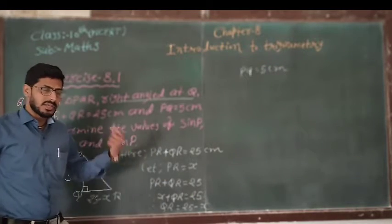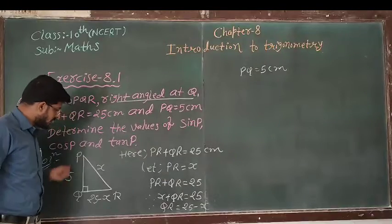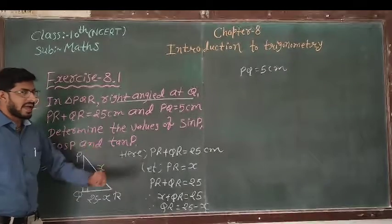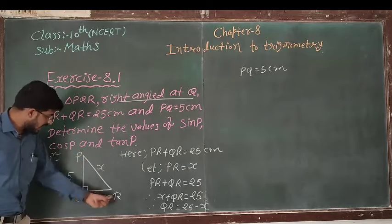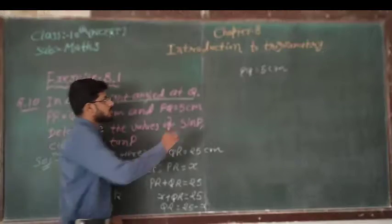Now, by Pythagorean theorem, we have to find the value of x, and put the value of x, and then find PR and QR.